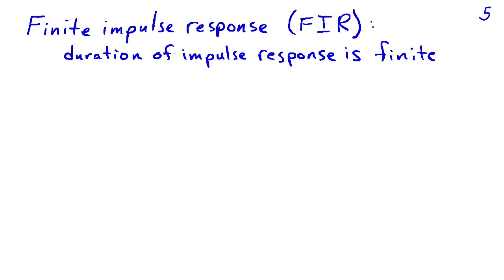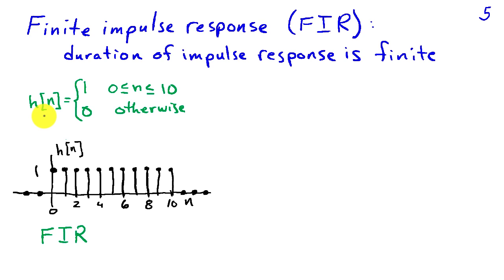We say a system is finite impulse response or has a finite impulse response if the duration of the system's impulse response is finite. So suppose the impulse response was 1 whenever n was between 0 and 10, and it was 0 otherwise. So I've graphed that impulse response here, and got 0 prior to n equals 0. Then it's 1 up till n equals 10, and then it's 0 again. This is a finite impulse response system, or FIR, because the impulse response duration is only through n equals 10. Thereafter, it's exactly 0.